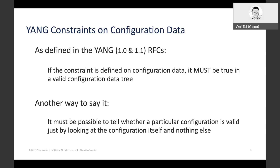Let's start with some background information from the RFC standards on this. As defined in the YANG 1.0 and 1.1 RFCs, Section 8.1, Constraints on Data: if the constraint is defined on configuration data, it must be true in a valid configuration data tree. Another way to say it is that it must be possible to tell whether a particular configuration is valid just by looking at the configuration itself and nothing else. The reason behind this requirement is to ease automation and reduce any custom coding required to deal with invalid configurations.